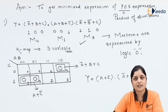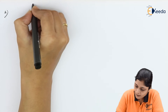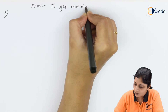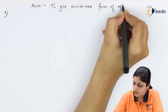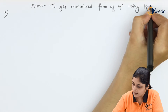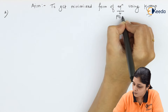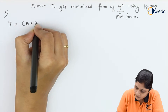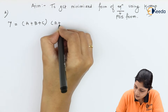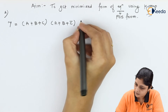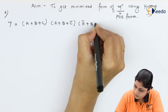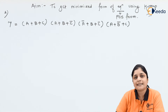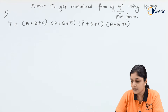Now the second example: your aim is to get the minimized form of a POS equation using K-map. The equation is Y = (A + B + C) · (A + B + C̅) · (A̅ + B + C̅) · (A + B̅ + C). This is a POS form expression that you have to minimize using K-map rules.